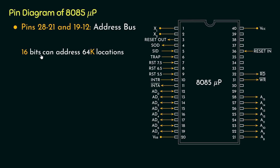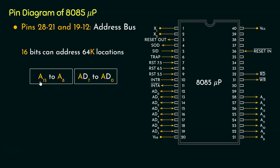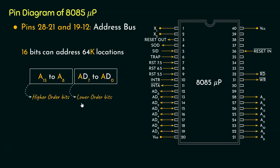Now what are these 16 bits? These are the bits sent via lines A15 to A8, and A7 to A0. Since we are talking about the address bus, instead of calling them D7 to D0, we now call them A7 to A0. So via pins A15 to A8 — these 8 pins — we are sending 8 bits of address, which are the higher-order bits of the 16 bits, that is the most significant 8 bits. Since we are talking about 8 bits, we can also call them the higher-order byte and the lower-order byte.